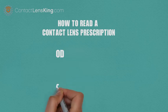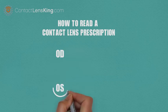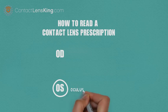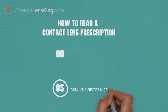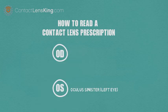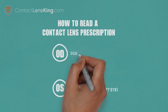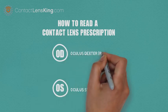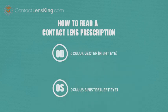OD and OS. These two abbreviations simply identify the respective eye that the prescription is for. OS stands for Oculus Sinister, or Left Eye. And OD stands for Oculus Dexter, or Right Eye.